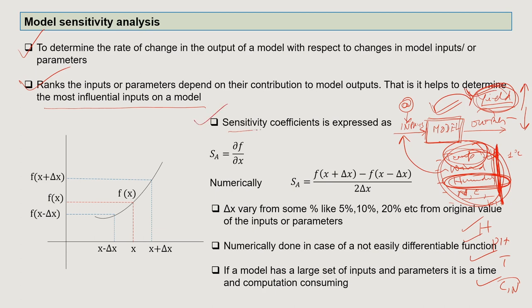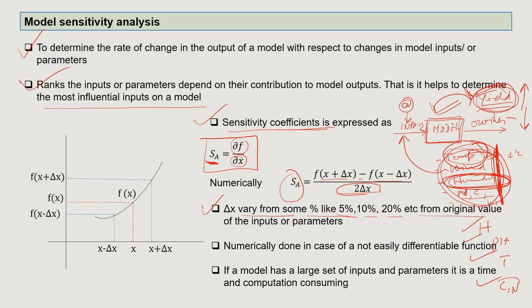The sensitivity coefficient is the measurement of the sensitivity of a model. It is expressed as SA = δf/δx. Numerically, the sensitivity coefficient is: f(x + Δx) − f(x − Δx) divided by 2Δx. Delta x varies from some percentage — say 5%, 10%, or 20% — from the original value of the inputs, depicting the variation in any input value.